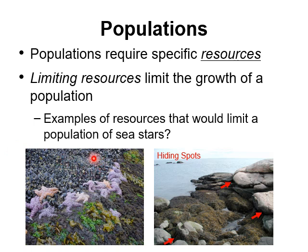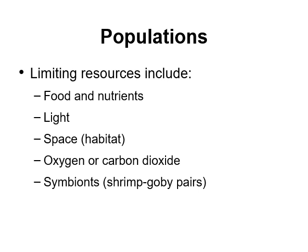Sea stars need mussels for food, hiding spots under rocks for low tide, water, and the oxygen in it. Some of the most common limiting resources are food, nutrients, light if you're a plant or anything that hunts using light, space to live, oxygen for animals, and carbon dioxide for plants. A lot of things are also limited by symbiotic relationships — for example, you don't find shrimp goby pairs where you don't have the gobies, and you don't find those gobies where you don't find the shrimp. Those are limiting resources as well.